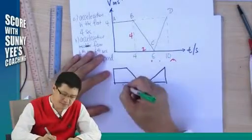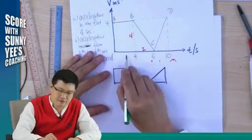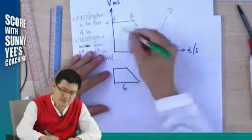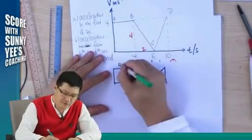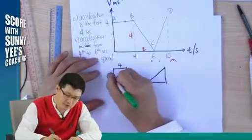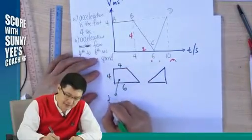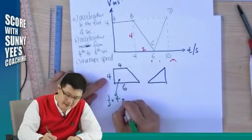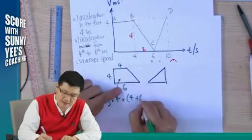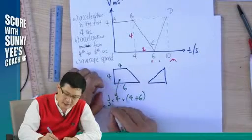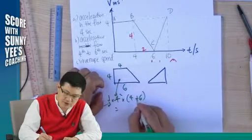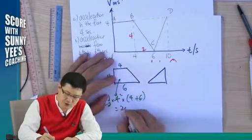The trapezium has the base of how much? 6. A to B is 4. The height is 4. So this area is how much? This area is half times height times 4 plus 6. Which is? Cancel off. 2. 10 plus 10 times 2. 20.